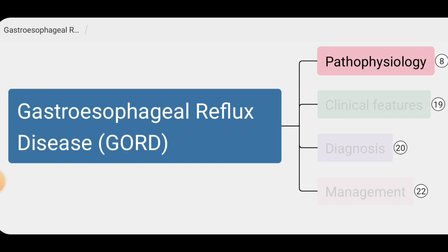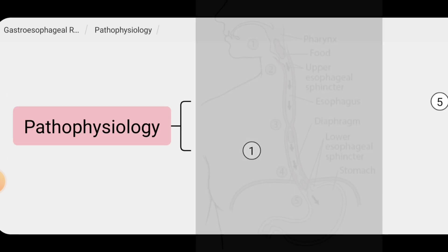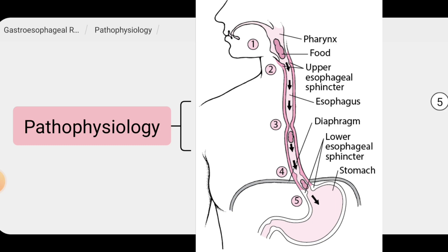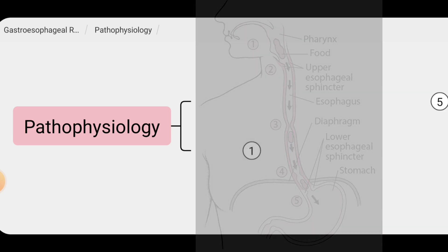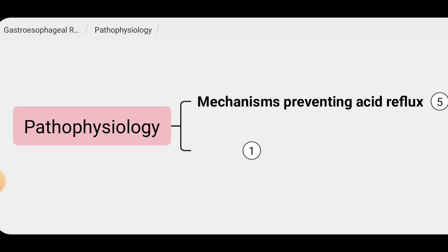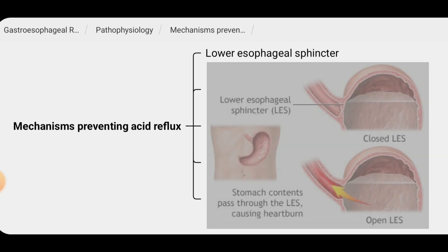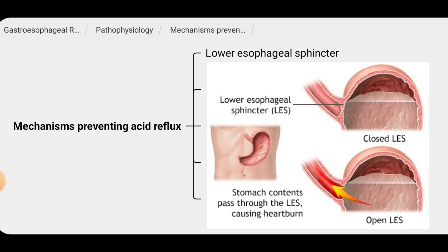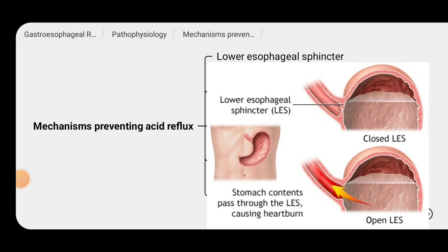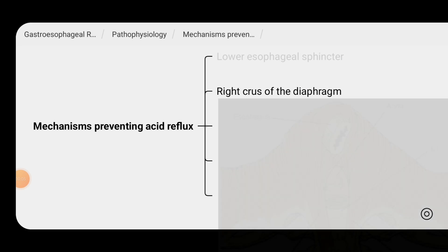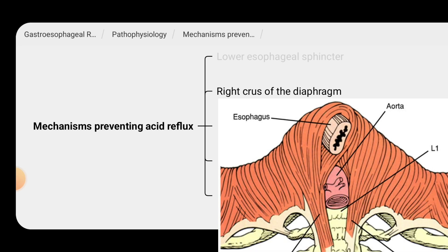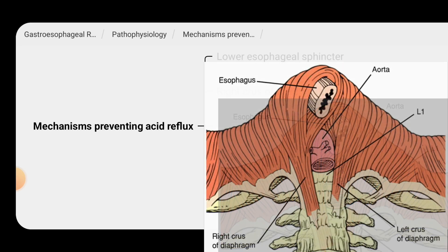The movements of our gastrointestinal tract are programmed to propel food from the mouth towards the anus. Likewise, food in the esophagus passes into the stomach, and there are several mechanisms to prevent food from entering the esophagus from the stomach. These include lower esophageal sphincter function.